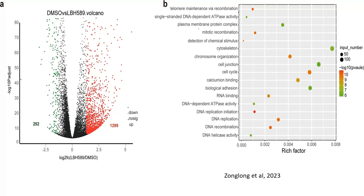Panel A shows RNA sequencing analyses of MCF7 cells treated with LBH589: 1,299 genes were significantly upregulated and 292 genes were downregulated. In panel B, gene ontology analyses revealed that significantly altered genes are enriched in pathways related to cytoskeleton organization, cell junction formation, and biological adhesion — key processes involved in cancer metastasis.